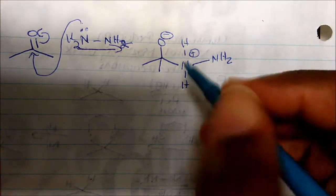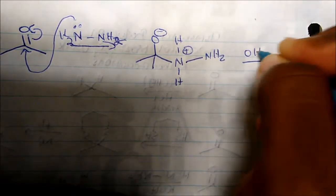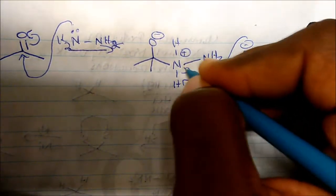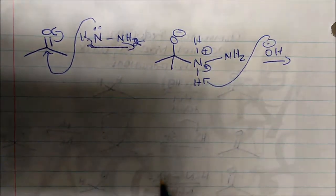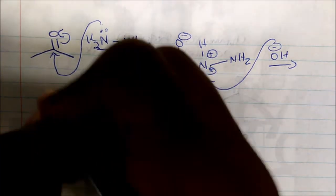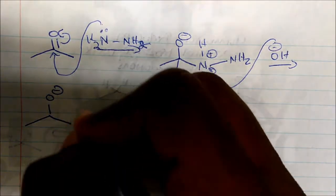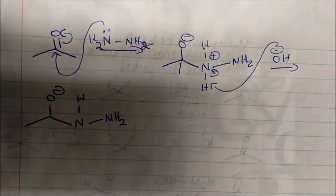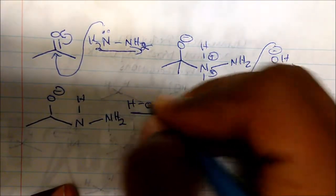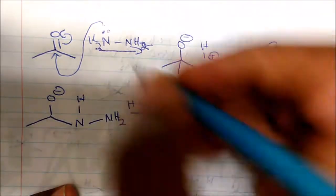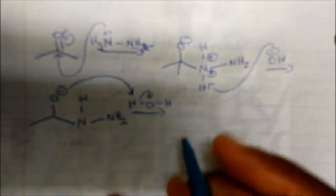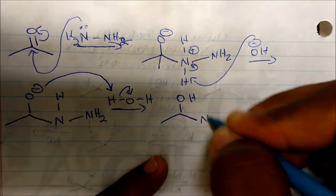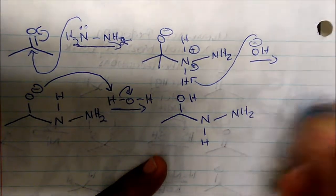Now, the protons around the nitrogen are relatively acidic, so in the next step, hydroxide is going to come in and act as a base. It's going to deprotonate — take one of these hydrogens off — and give nitrogen the lone pair. In this step, we form water. Then water is going to come in the next step, and since this nitrogen is relatively nucleophilic and basic, it's going to grab one of the hydrogens and reform hydroxide. So now we come to a point where our molecule is neutral.